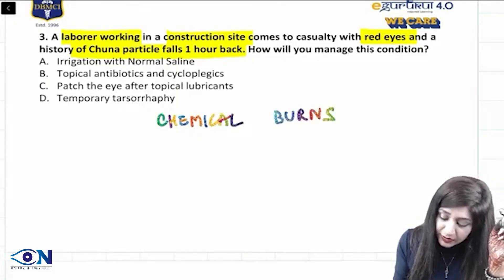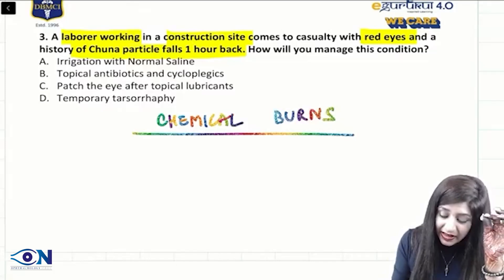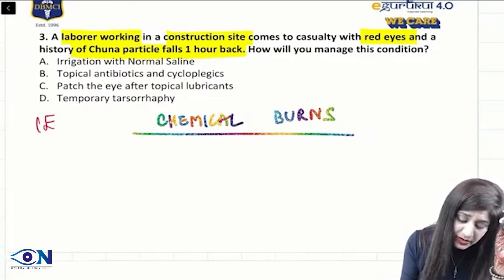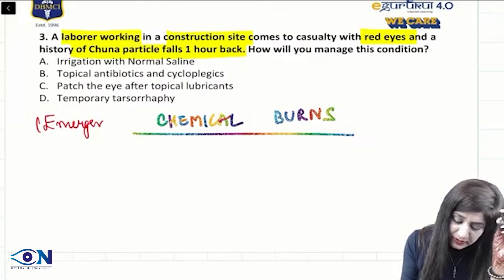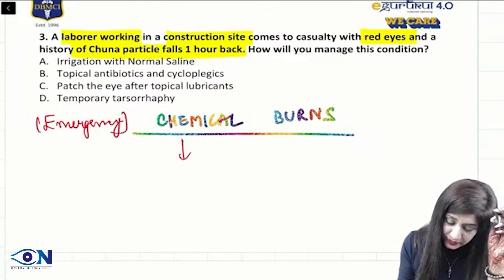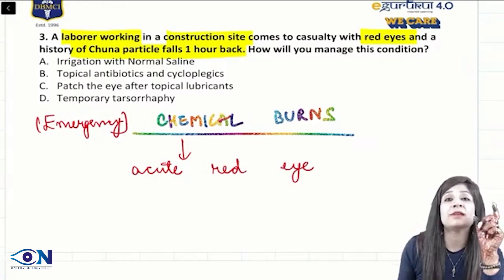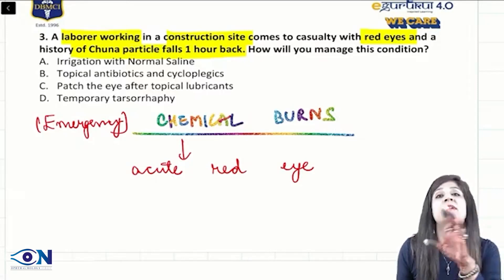Whenever we have chemical burns in the eye, these are emergency conditions which can present with acute red eye. Can you tell me the differential diagnosis of acute red eye as well as the type of vision loss that can present in the patient?